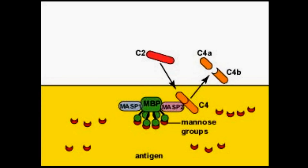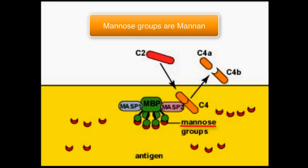The final pathway we have left is the lectin pathway. The lectin pathway is used when you don't use the alternative or the classic pathway — so assuming that you don't have an antibody that is already made, or an endotoxin or LPS. Instead, there are some surface molecules on the bacteria called mannose groups or manans.